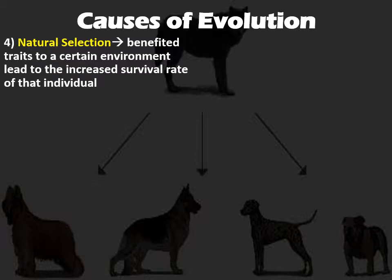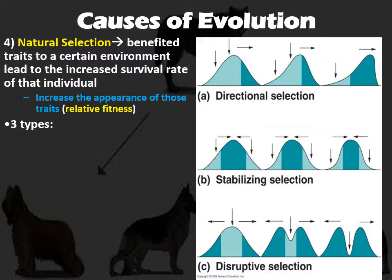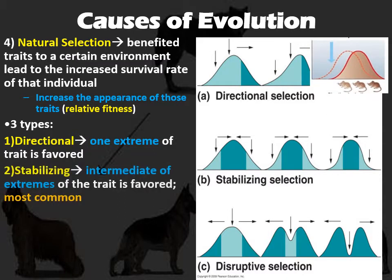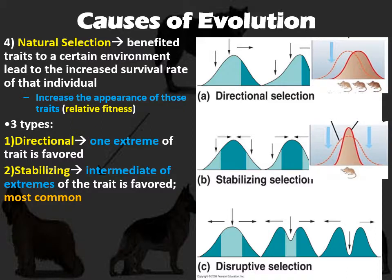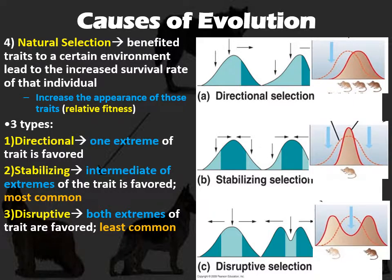Natural selection is this idea that traits increase your survivability and fitness, so you probably get to reproduce because you survive longer. We've already talked about different ways natural selection can occur. We can have directional selection, moving towards one extreme. We can have stabilizing selection, moving towards the medium or most common. And we have disruptive selection, which moves towards the two least common — the two extremes, kind of dividing the group into two.